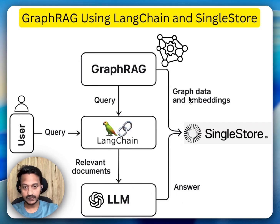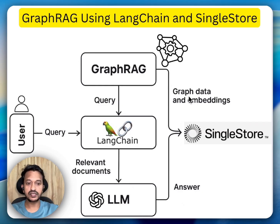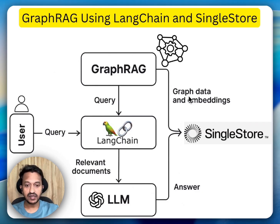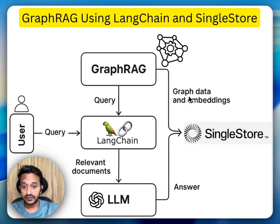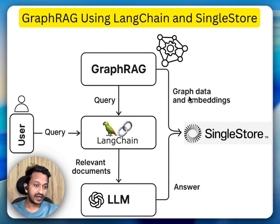The first step is to set up the environment — pip install LangChain, SingleStore, OpenAI, NetworkX. Second step is to insert documents: we add around 100 sample knowledge documents to SingleStore using LangChain's document model. The third step is to build a knowledge graph. We use NetworkX to define relationships — for example, Einstein developed relativity, or photosynthesis depends on light. We create relationships inside the sentences for more accurate responses.